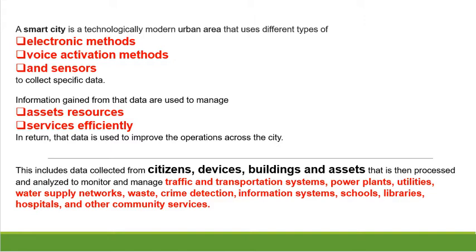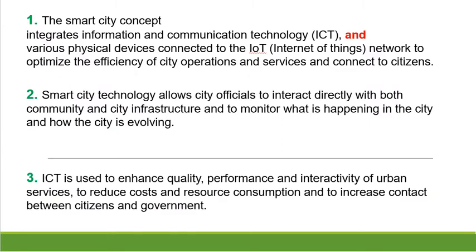This includes data collection from citizens, different devices, buildings, and assets that is then processed and analyzed to monitor and manage different sorts of services like traffic and transportation systems, power plants, utilities, water supply networks, waste, crime detection, information systems, schools, libraries, hospitals, and other community services. The smart city concept integrates information and communication technology — ICT — and various physical devices connected to the Internet of Things (IoT) network to optimize the efficiency of city operations and services.